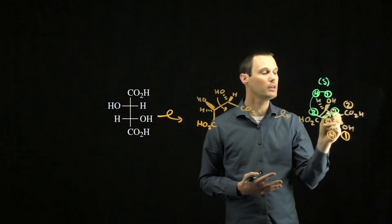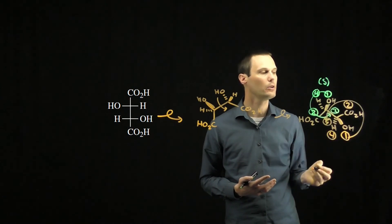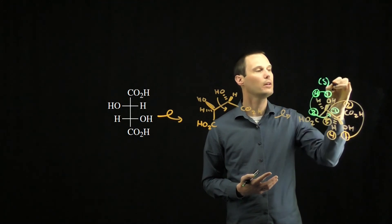Hydrogen is already on the dash. It's already pointed away from me. So ignoring group number four, I can draw a circle from one to two to three, ignoring four. This is also a counterclockwise circle. This stereocenter is also an S stereocenter.